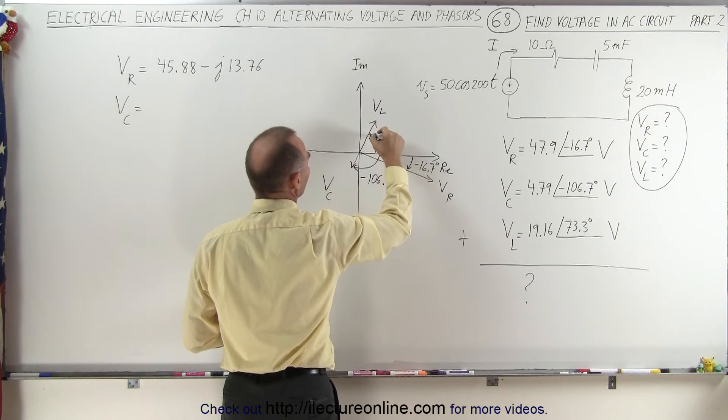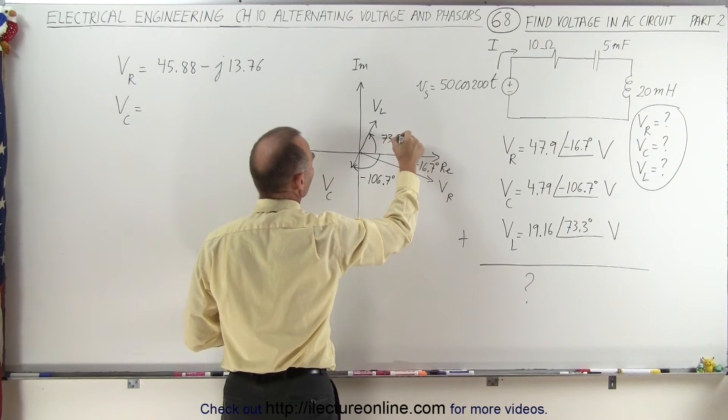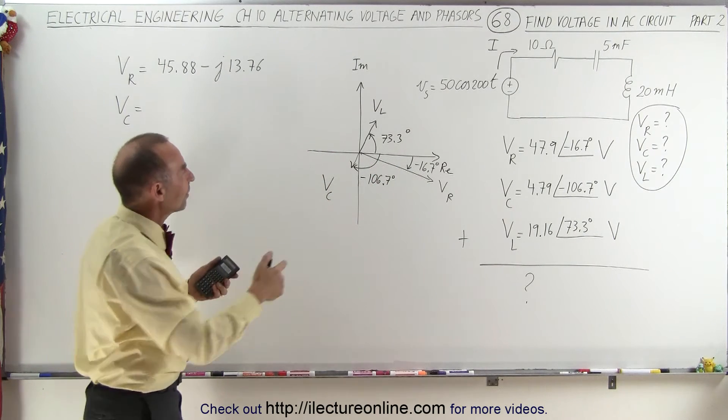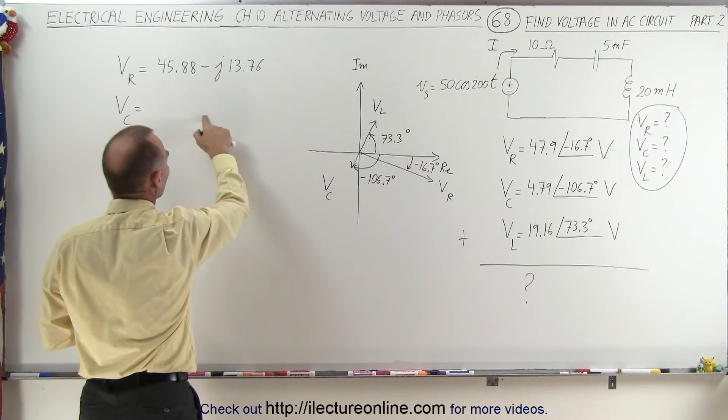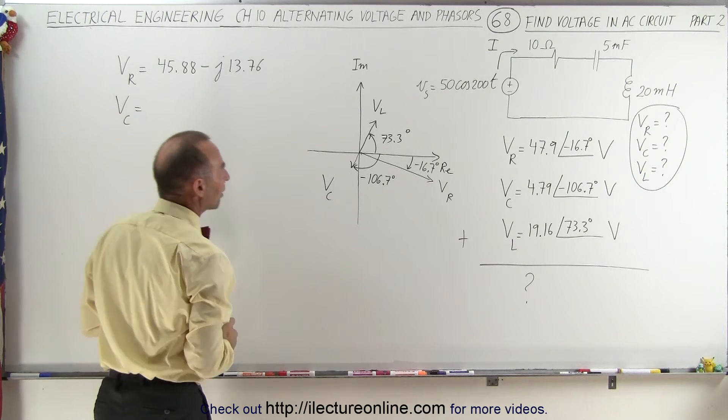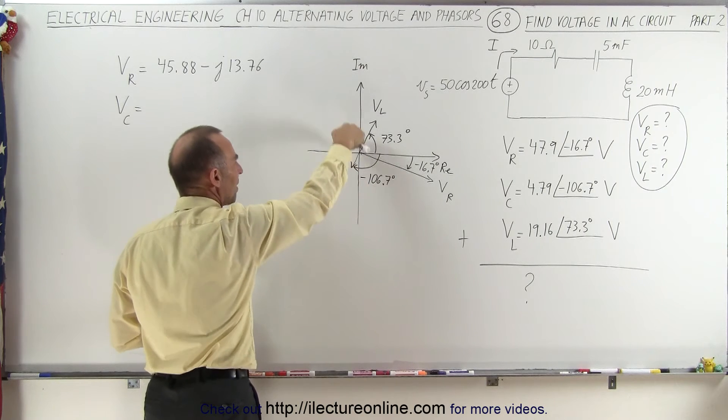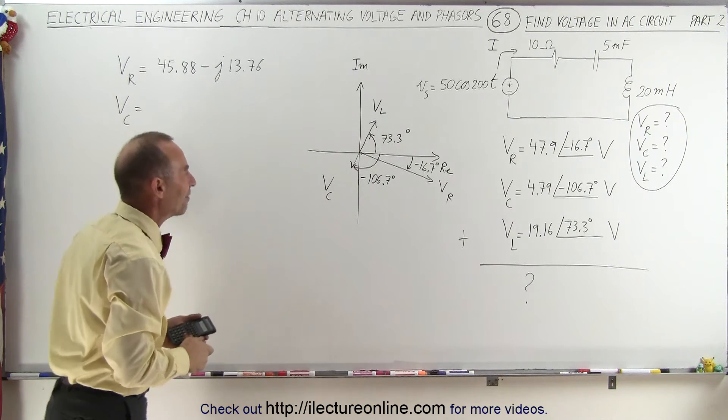And the angle from there to there would be a positive 73.3 degrees. Sometimes by drawing the phasors, it gives you a better feel for how to write the voltage in terms of the real and imaginary parts. Notice that the real part will have a negative value, and the imaginary part will have a negative value as well.